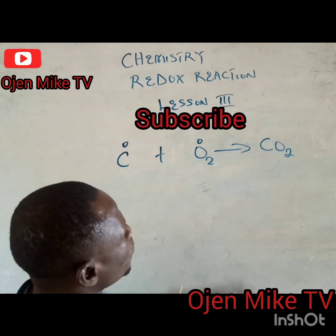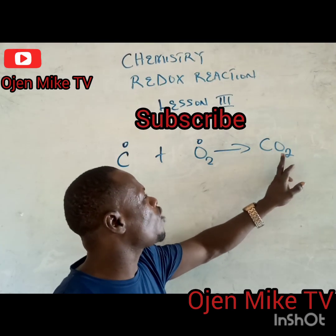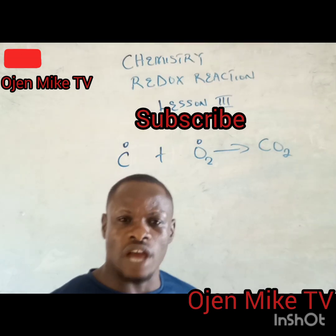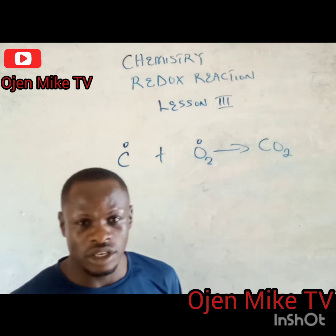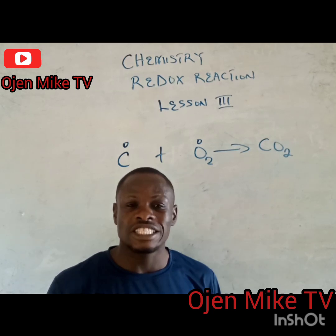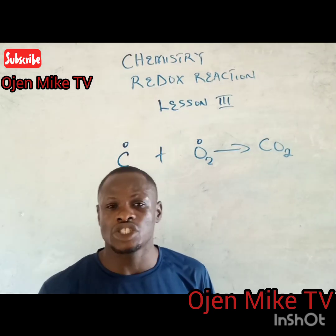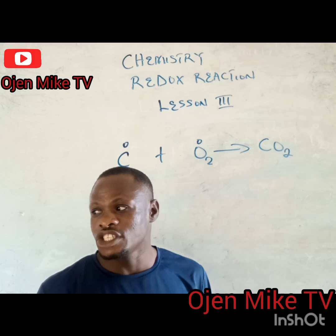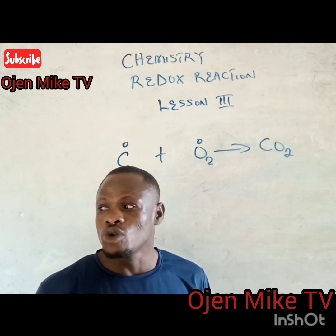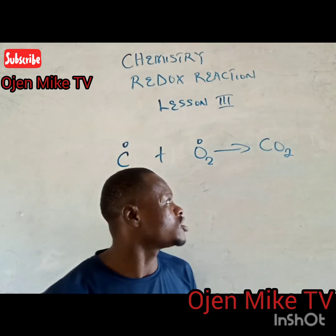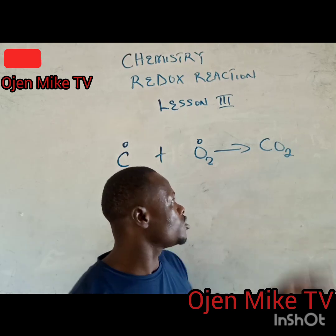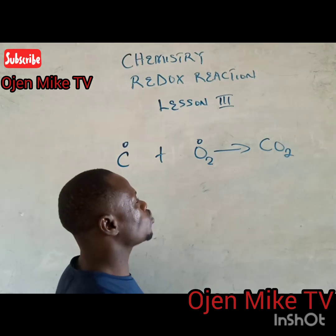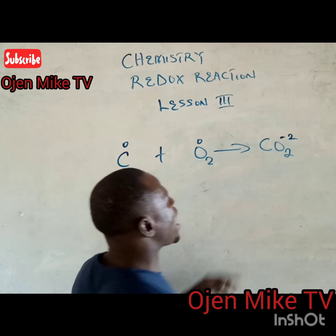Then, we have the oxidation number of oxygen in the product. Anytime oxygen is bonded with another element to form a compound, it has an oxidation number of minus two, because it is in group six of the periodic table. So the oxidation number of oxygen here is minus two.